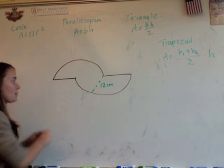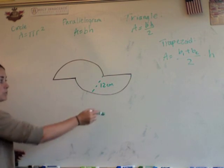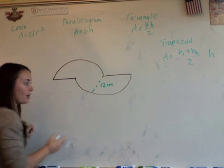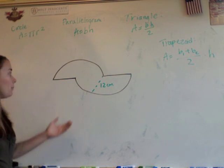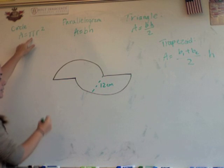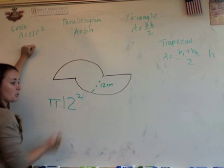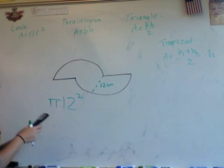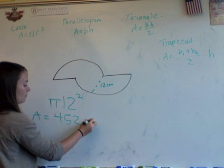So since we have two halves of circles, really all together one circle with a radius of 12. You see our radius right here of 12. And once we figure that out, that's the hard part. Figuring out the formula is pretty easy. I'm just going to do pi times my radius 12 squared. And I get roughly 452 centimeters squared.